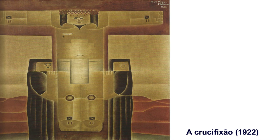Este Cristo — a Crucificação — é interessante. A ideia que passa é como se fosse um avião visto de cima. A proporcionalidade de um lado e do outro é simplesmente perfeita. As duas Marias — Nossa Senhora e a outra Maria — estão rentes e exatamente proporcionais. Se você passar uma linha bem ao centro da figura do Cristo, notará que a proporcionalidade de um lado é exatamente igual à do outro.